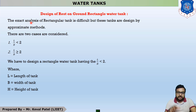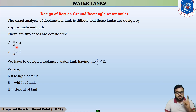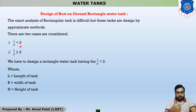This rest-on-ground rectangular water tank does not use an exact analysis method; we have to design it using an approximate method. There are two types of cases. The first case is when the L/B ratio is less than 2, where L means the length of the tank and B means the width of the tank.